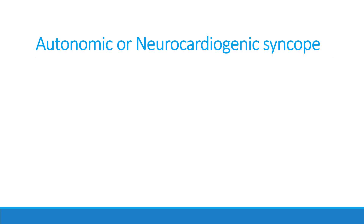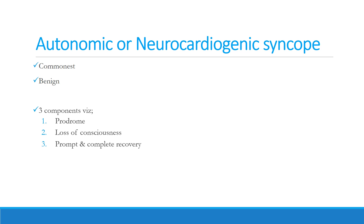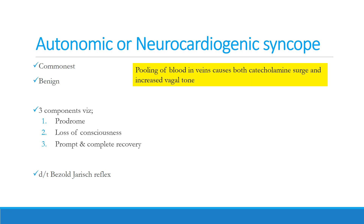Autonomic or neurocardiogenic syncope is the commonest and is a benign condition. It mainly has three components: a prodrome in which children describe dizziness or lightheadedness, then loss of consciousness, followed by a prompt and complete recovery. Basically this syncope is due to the Bezold-Jarisch reflex — pooling of blood in veins causing both a catecholaminergic surge and an increase in vagal tone.